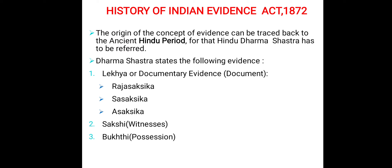Rajaschika is a document executed in the king's court by the king's clerk and attested by the presiding officer affixing the shield, which resembles a modern registered document. Sasaksika is a purely private document written by anyone in their own hand with witness. Asaksika is a document retained by the party itself and hence admissible. Just like the present day, ancient Hindu law of evidence also preferred documentary evidence over oral evidence.